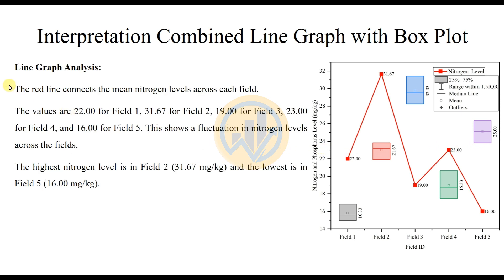For the line graph analysis: the red line contains the mean nitrogen level across each field. The values are: Field 1 — 22, Field 2 — 31.67, Field 3 — 19, Field 4 — 23, Field 5 — 16. This shows fluctuations in the nitrogen level across the fields. The highest nitrogen level is in Field 2 at 31.67 mg/kg, and the lowest nitrogen level is in Field 5 at 16 mg/kg.